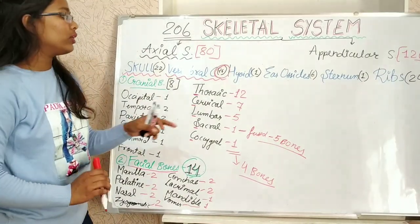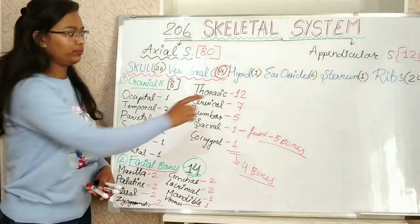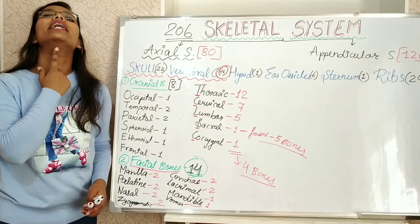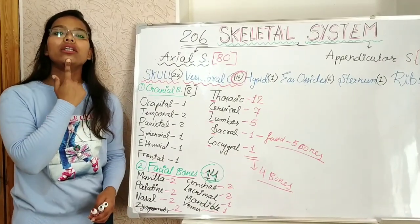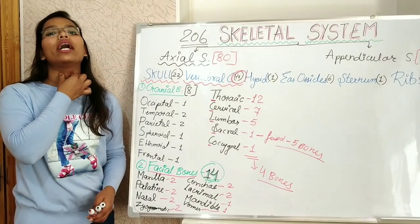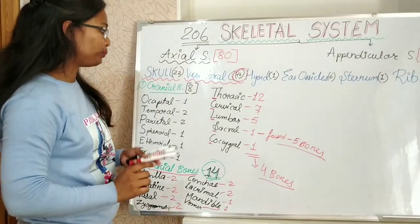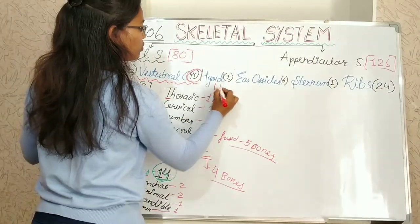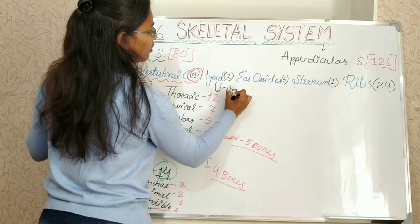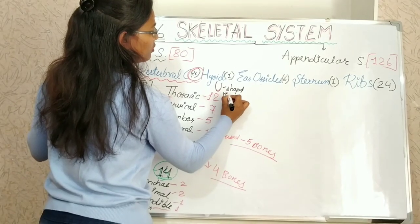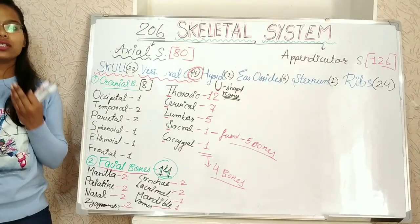Hyoid bone, it is 1. It is located in the anterior midline of the neck between chin and the thyroid cartilage. It is U shaped bone and this hyoid bone supports our tongue.